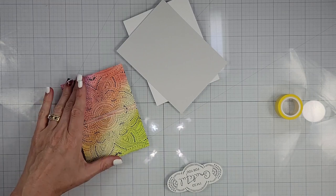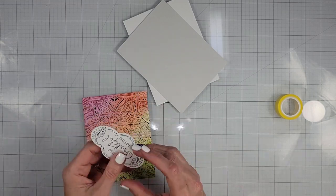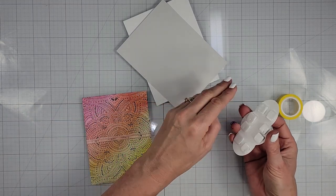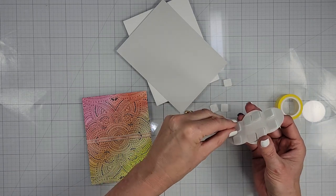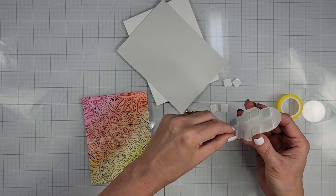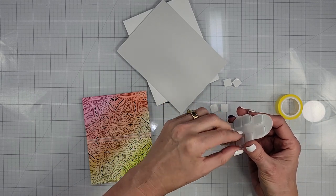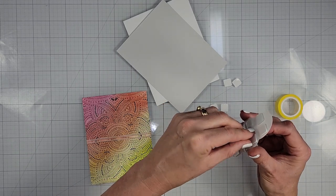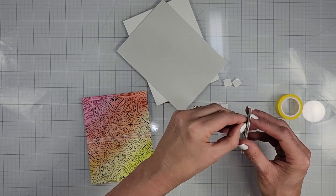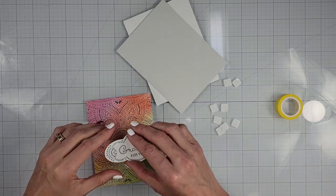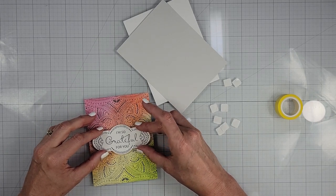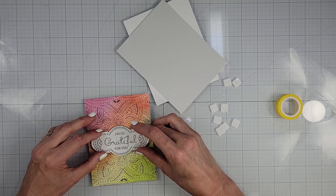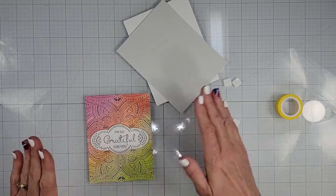All right. So I have my twine wrapped around there. I am going to take and put my sentiment on there. And I'm definitely going to have to try some other ink pads. I've seen that some of the dye inks can work as long as you have a felt pad. So I am going to kind of get this into place. I'm going to put that down.